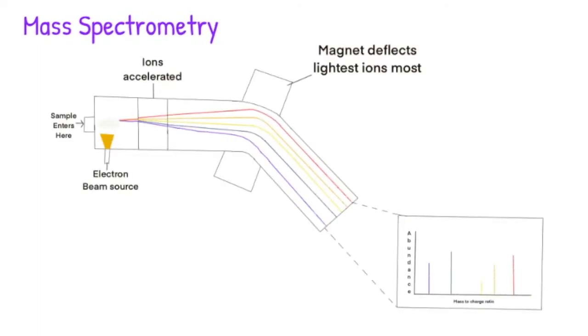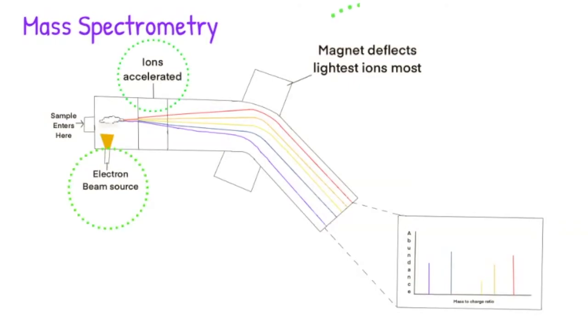In mass spectrometry, it identifies substances by electrically charging the sample molecules with an electron beam and accelerating the ions and passing them through a magnetic field. This blows apart the molecules into charged fragments. The magnet deflects the ions as they pass through it, with the smallest ions being deflected the most.